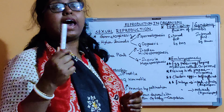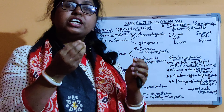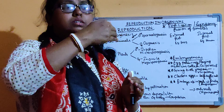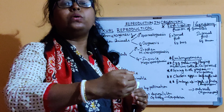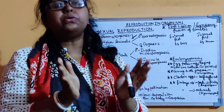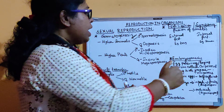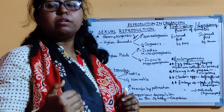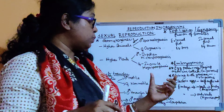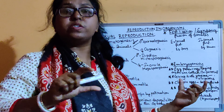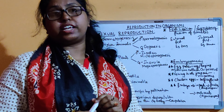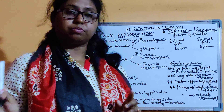Some other living organisms like mammals show internal fertilization. After fertilization, the zygote is formed and undergoes division, and after the development, they produce a young baby. This process is called the viviparous process, and the living organisms which show this type of embryogenesis are called viviparous animals.